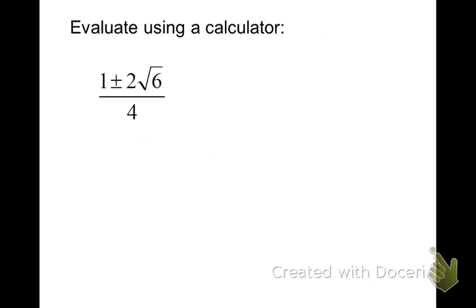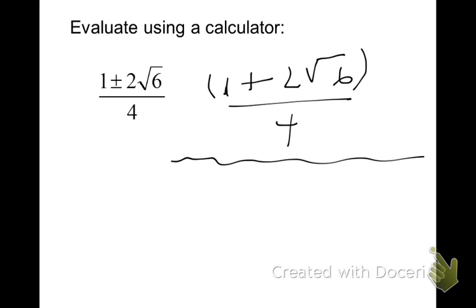If you're asked to evaluate this with a calculator, you're actually going to have to do two problems. There's a plus and a minus. So, you're going to have to do a 1 plus 2 radical 6 over 4, and then that would go in your calculator. Make sure that what's ever in the numerator, you put in parentheses in your calculator. And then, once you do that one, you're going to go ahead and do the minus 1, and again, it'll be 1 minus 2 times the square root of 6, and that'll be all divided by 4. And that's the way that you would put that in your calculator.